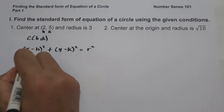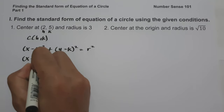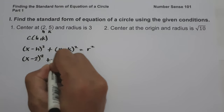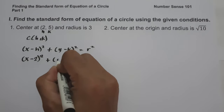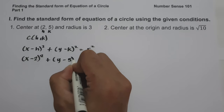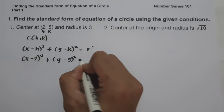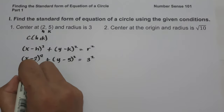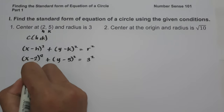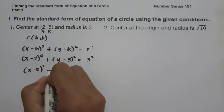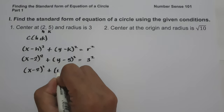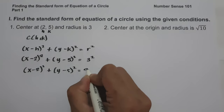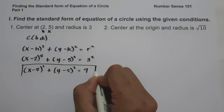Substituting, this will be (x minus 2) squared plus (y minus 5) squared equals 3 squared. Simplifying, this gives us (x minus 2) squared plus (y minus 5) squared equals 9, and this will be our answer.